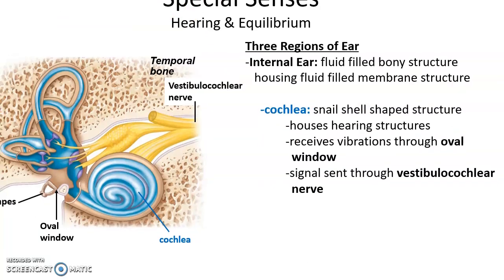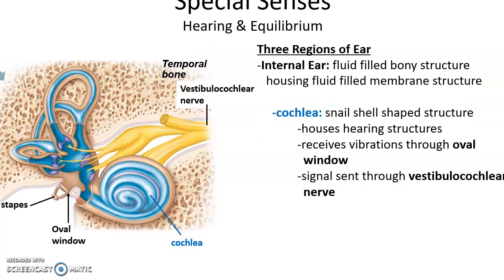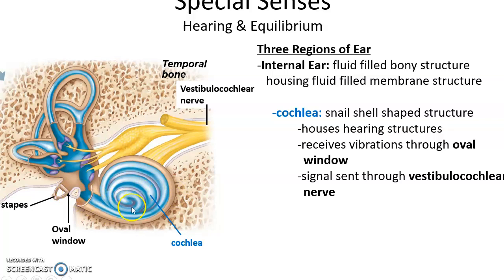That brings us to the inner or internal ear, which has a weird-shaped bony structure in the temporal bone called the bony labyrinth. It looks kind of like a snail shell with a head and tentacles. The snail shell part is the cochlea, which houses the structures for hearing. Vibrations through the oval window are transmitted through fluid in the cochlea, eventually leading to a signal sent through the vestibulocochlear nerve to the brain.